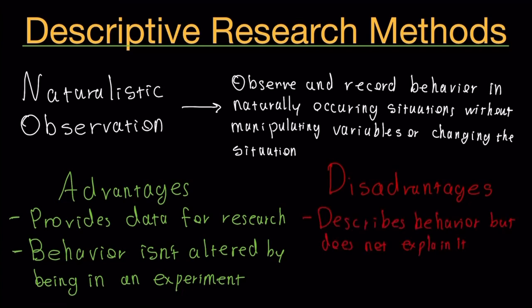The disadvantages is that it describes behavior but doesn't explain it. There's also observer bias similar to what we had in the case study. In naturalistic observation, the information has to come through a person. Somebody has to be doing the observing and that individual can have some biases or make some mistakes.